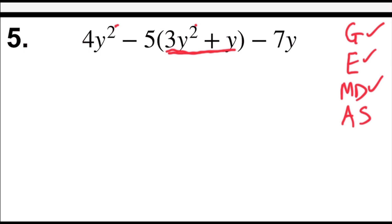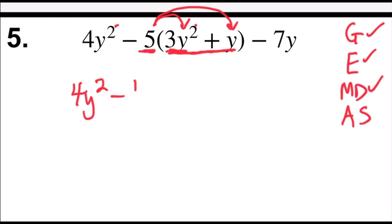Next, multiply and divide. I do have algebraic multiplication, which is the distributive property. I'm going to multiply negative 5 by both terms inside. So I would get 4y squared. Negative 5 times 3y squared is negative 15y squared. Negative 5 times positive y is negative 5y.